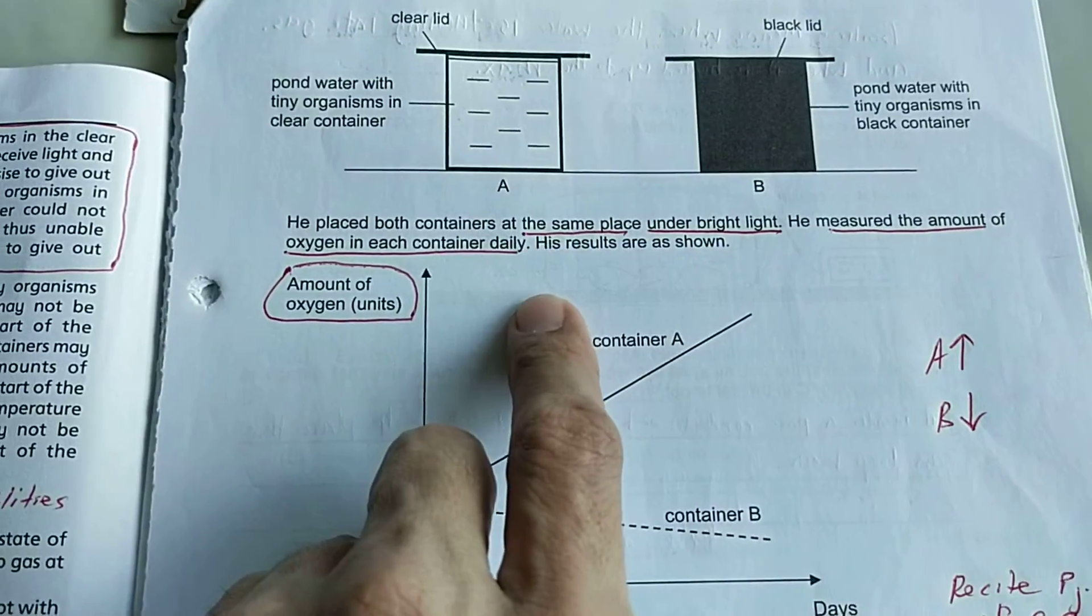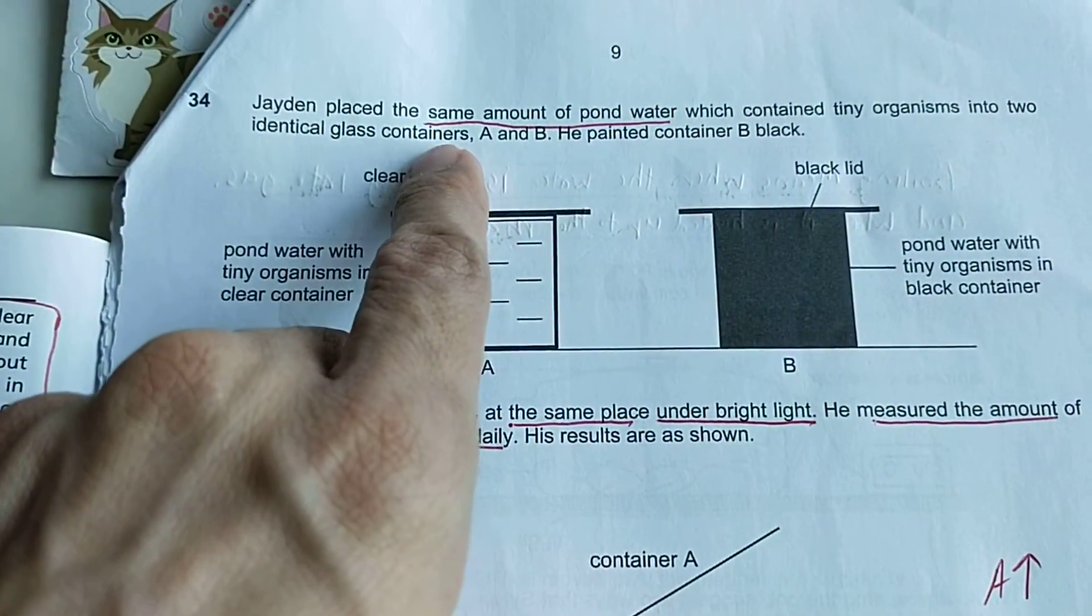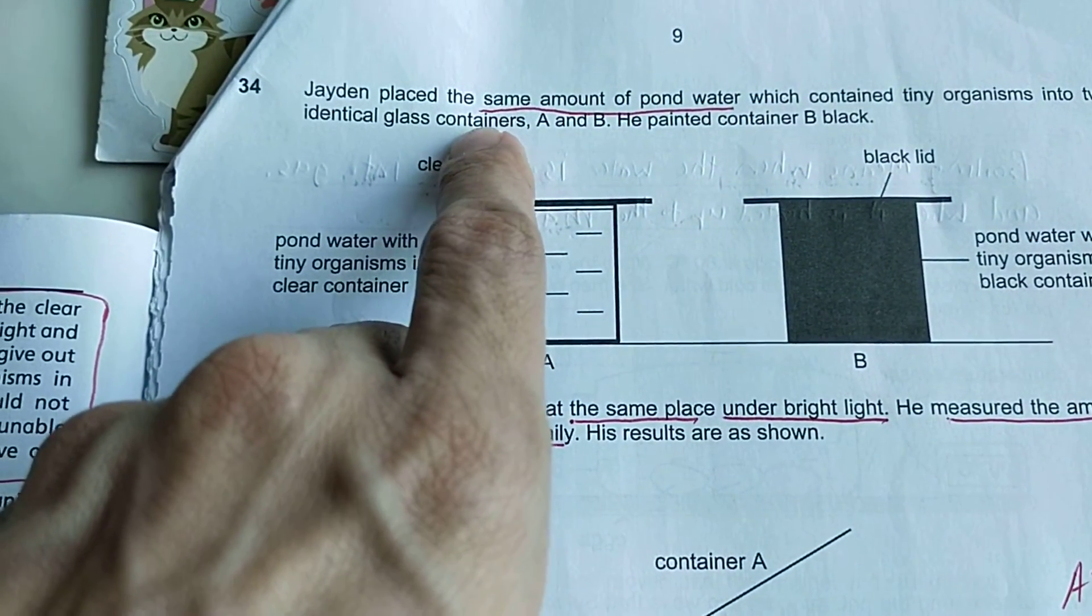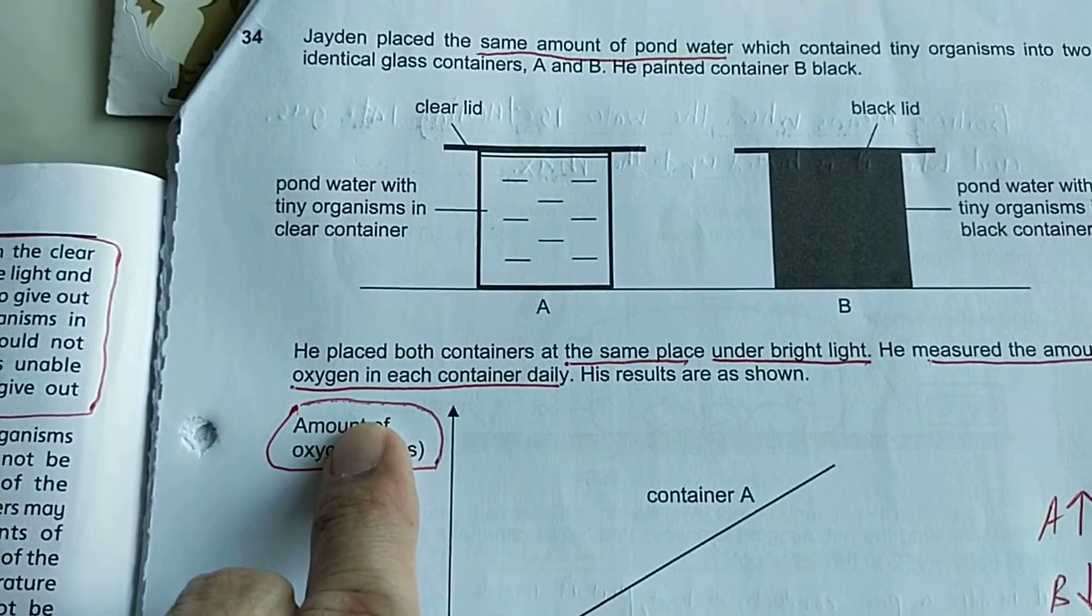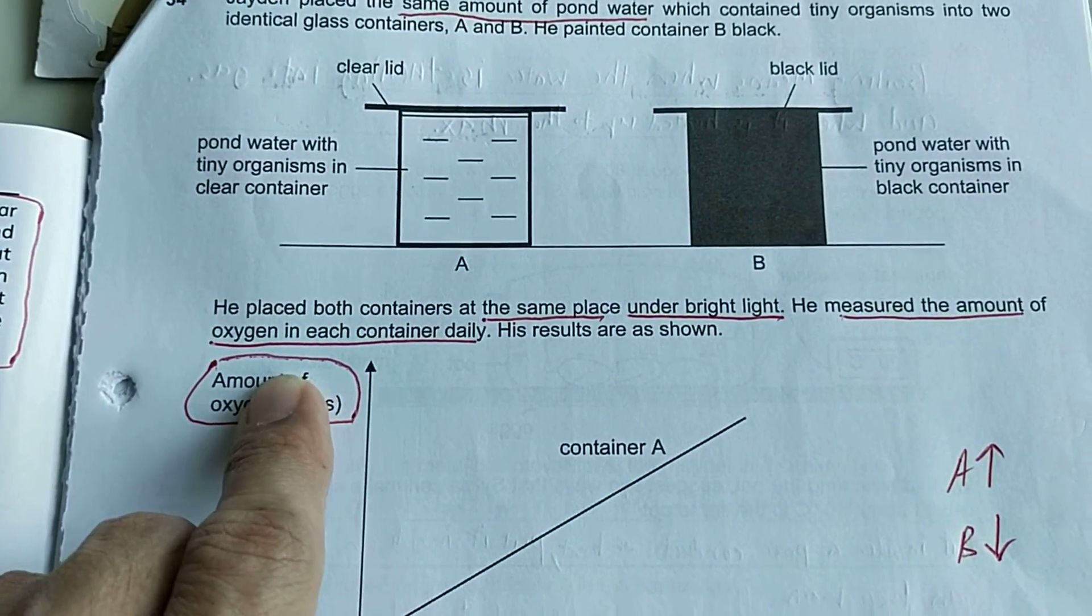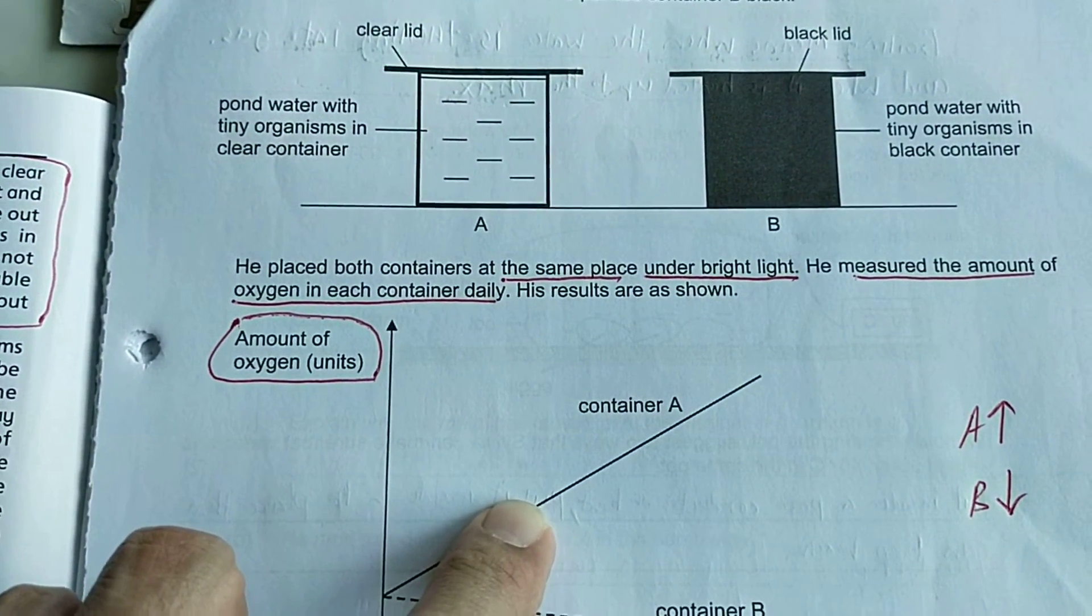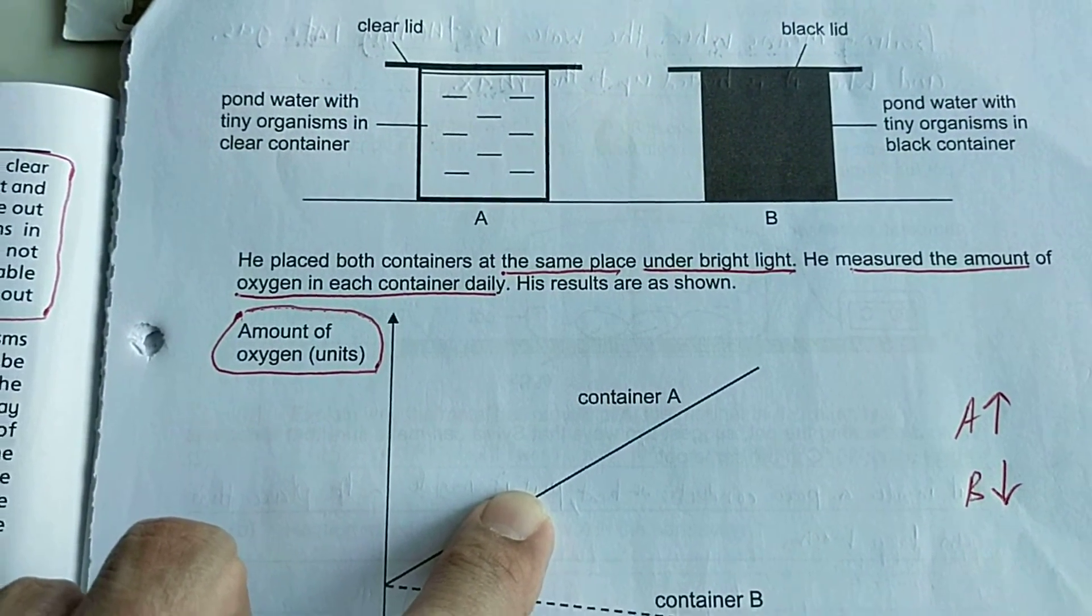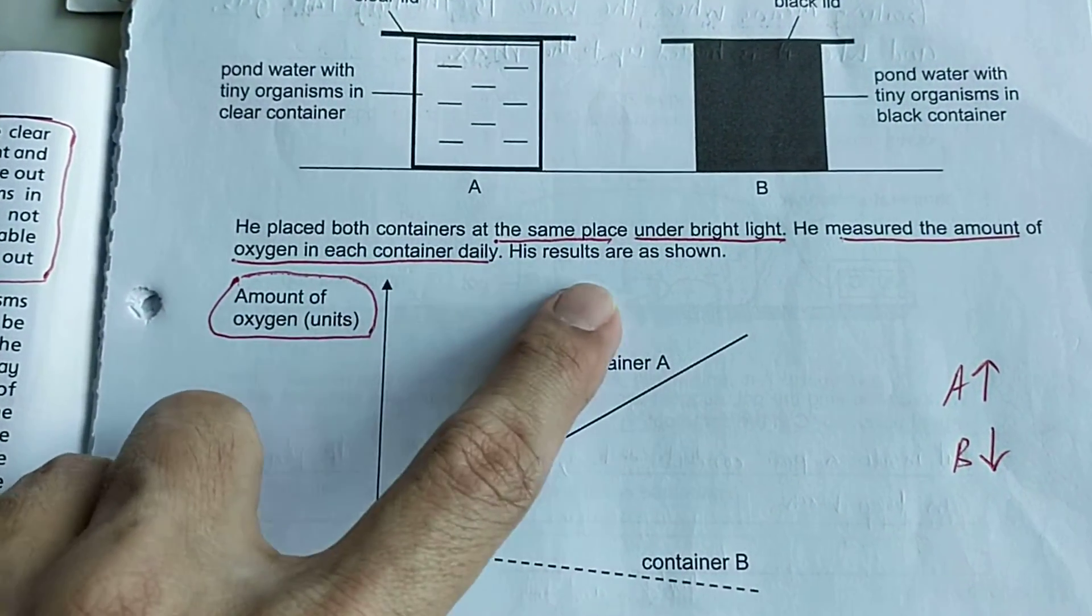This is the skill which I teach my students they must apply. It's called annotation skill. When they read the questions they have to underline the keywords at the same time as they are reading to save time to complete the PSLE science paper. The PSLE science paper is very time sensitive, needing to be completed in 1 hour and 45 minutes.